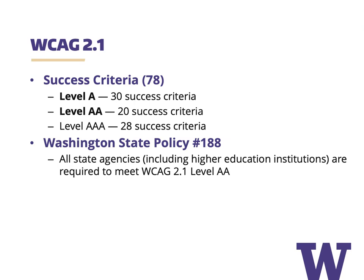Washington State Policy 188 requires all state agencies — including higher education institutions like the University of Washington — to have accessible information technology. The minimum accessibility standard specified by that policy is WCAG 2.1 level AA, so we need to meet that level of accessibility with our websites.